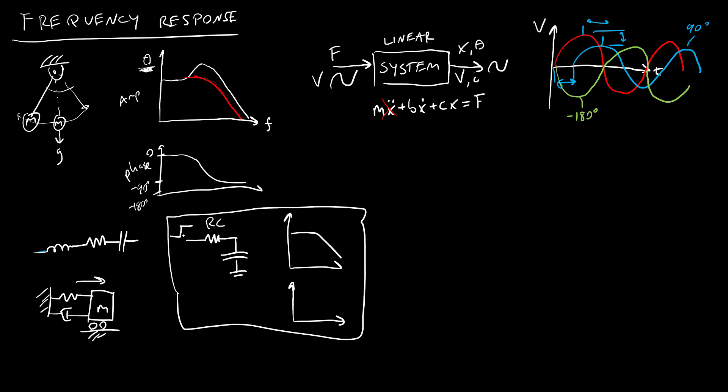What happens when we send a step change in voltage into this circuit? Now we're going to look at what happens when we send a sine wave voltage into this circuit. We're going to look at the output, which, as we just discussed, we know since this is a linear circuit, is also going to be a sine wave.